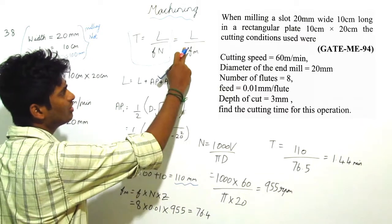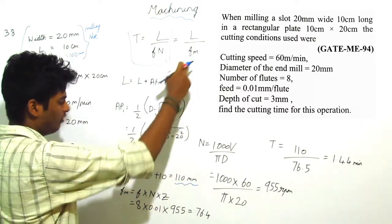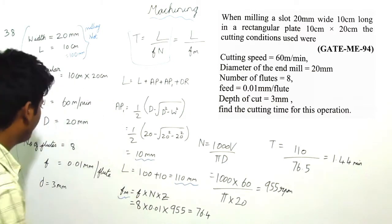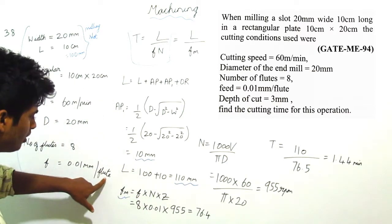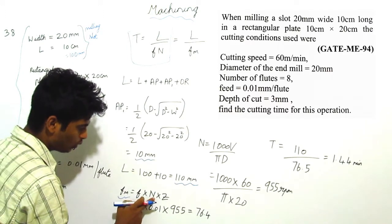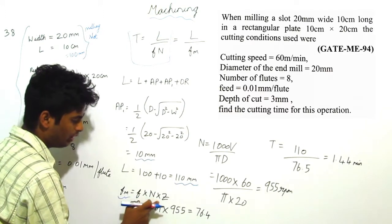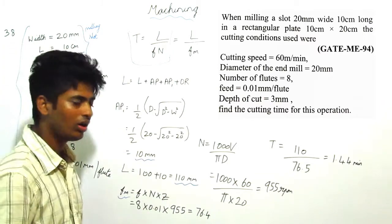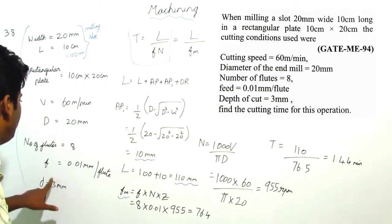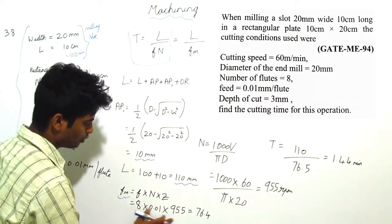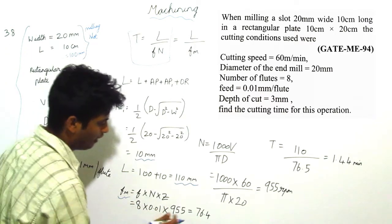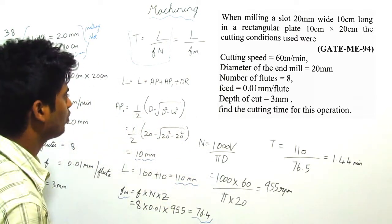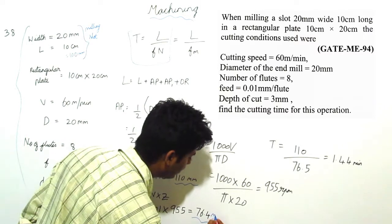Then we have to find this Fm value, that is machine or table feed. Fm is equal to feed per cut or feed per flute into N, that is spindle speed, into Z value. Z is number of teeth or number of flutes. Substituting all those values in this Fm we are getting 76.4 mm. This is machine or table feed.